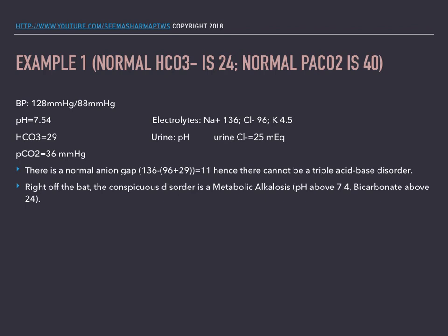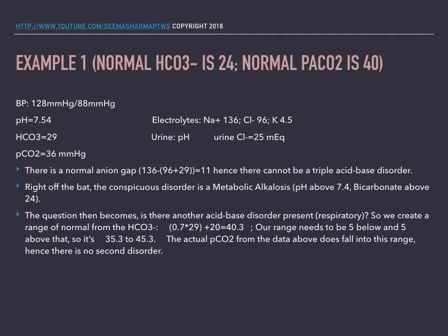Right off the bat, the conspicuous disorder is a metabolic alkalosis — the pH is above 7.4 and the bicarb is above 24. Now we look at the carbon dioxide. We create a range from the bicarb, adding 5 and subtracting 5. The actual carbon dioxide is 36 and it falls within this range, so there is no second disorder. This is just a metabolic alkalosis, and compensation explains the carbon dioxide fully.